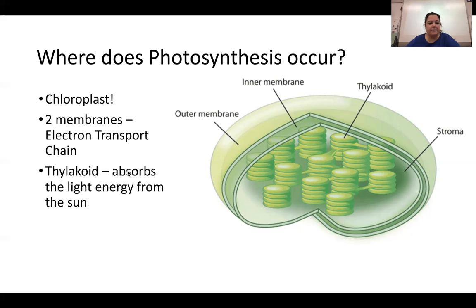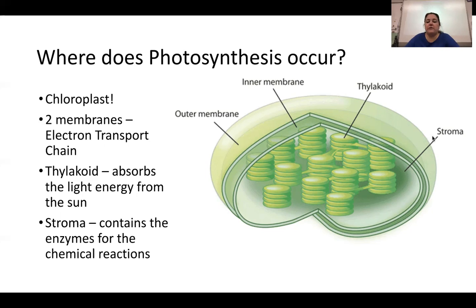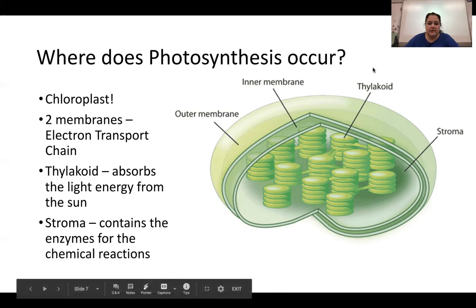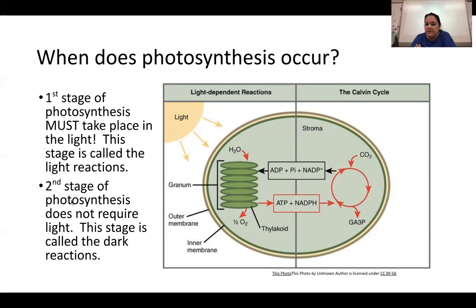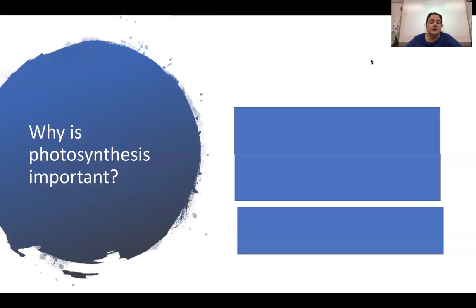The thylakoid membranes are involved in the electron transport chain. The stacked thylakoids absorb light energy — the more thylakoids, the more sunlight can be absorbed. The stroma contains enzymes for photosynthesis reactions. Photosynthesis occurs in two stages: the first is the light-dependent reactions, which require light; the second is the Calvin cycle, also called the dark reactions, which do not require light.